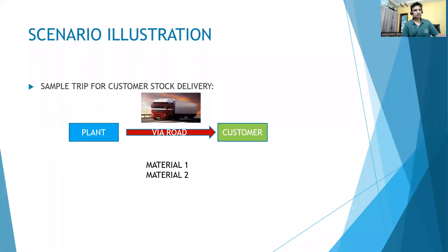Hi, welcome back. This is a simple scenario illustration for customer stock delivery. You can see the plant as the departure point. The shipping point is the place where you will do your picking, loading, and transportation planning activities.